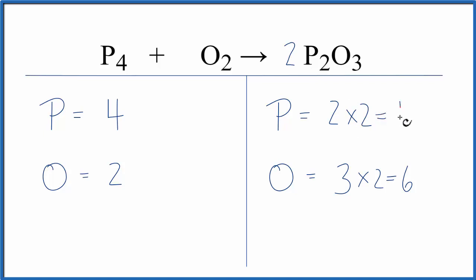That gives us four which actually solves our problem here, it fixes the phosphoruses. And then for the oxygen we have two here and six, two times three, two times three that'll give us six and we're done.